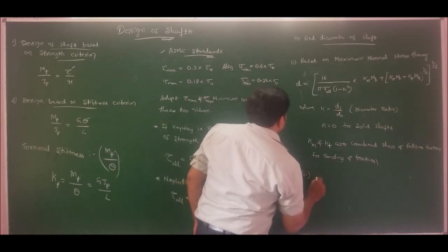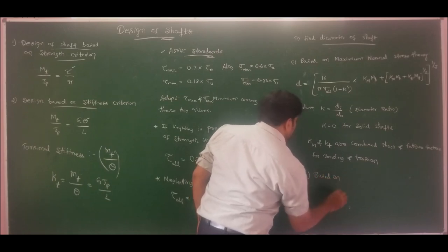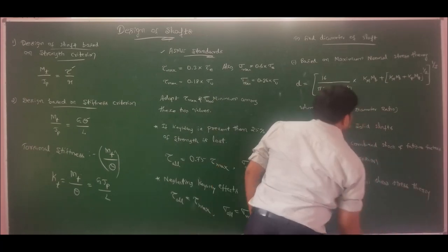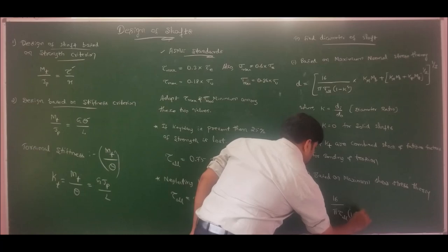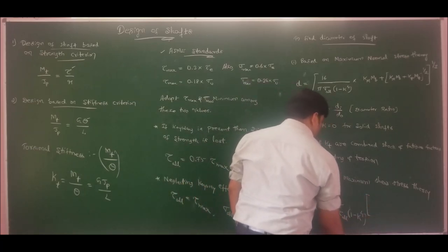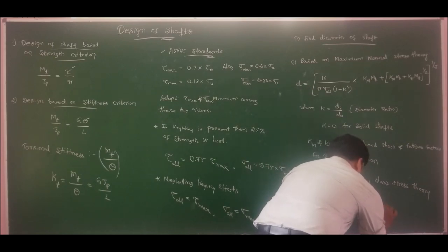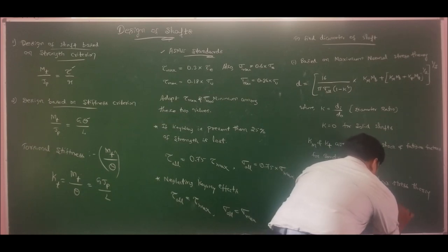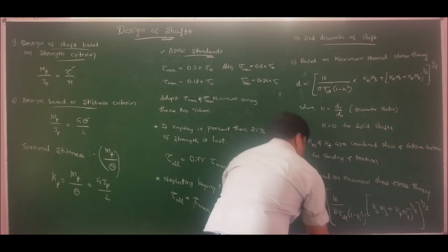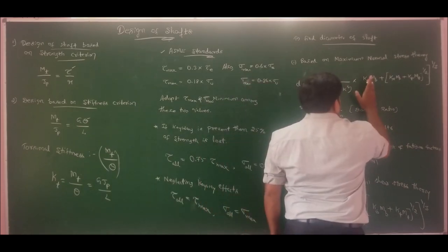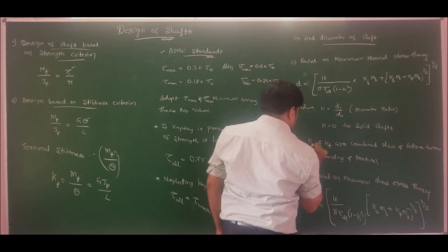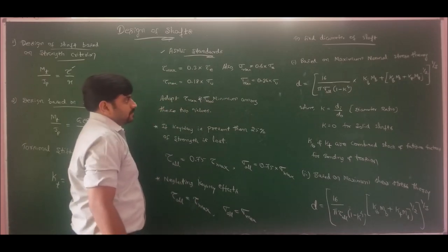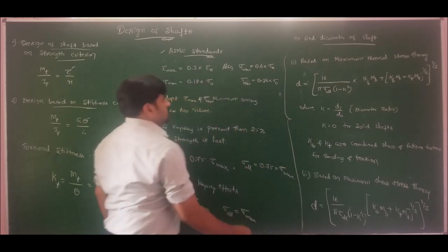The second approach is to design based on maximum shear stress theory. The diameter of the shaft is given by: d = (16 / (π · τ_allowable · (1 - k⁴)))^(1/3) multiplied by √((Km·Mb)² + (Kt·Mt)²), where k = 0 for a solid shaft. Cb and Ct are the combined shock and fatigue correction factors for bending and torsion.